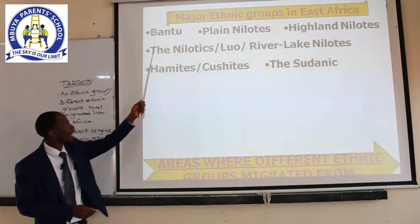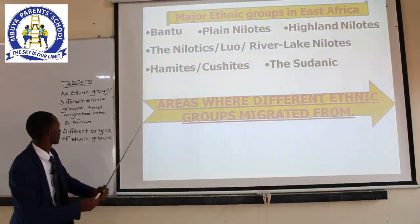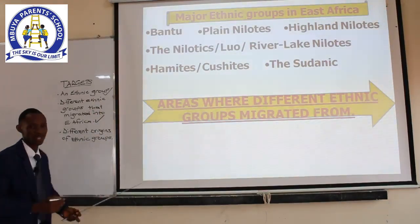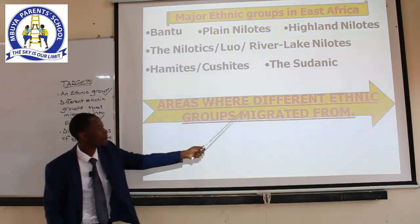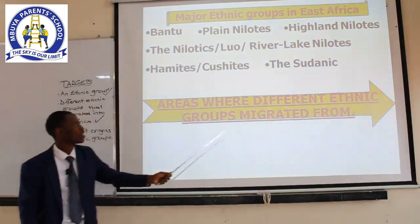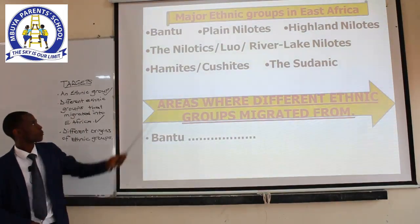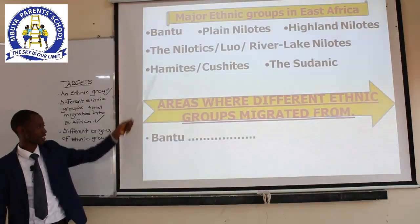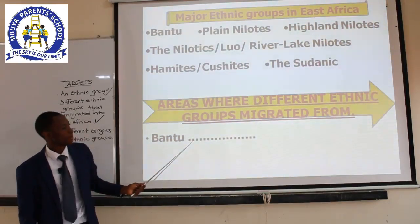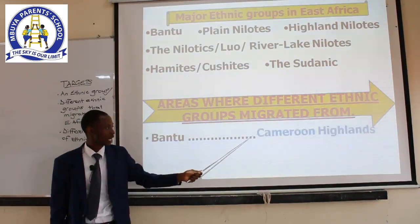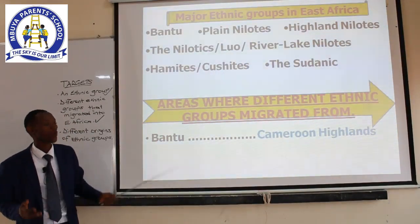After outlining our major ethnic groups in East Africa, the second target is covered. Let us go to the areas where different ethnic groups migrated from. To come to East Africa, where did these people come from? The largest ethnic group in East Africa are the Bantu. Where did the Bantu come from to settle in East Africa? The Bantu came from a place called the Cameroon Highlands.